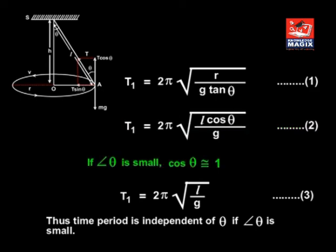If angle θ is small, cos θ ≅ 1. So T₁ = 2π√(l / g). Thus time period is independent of θ if angle θ is small.